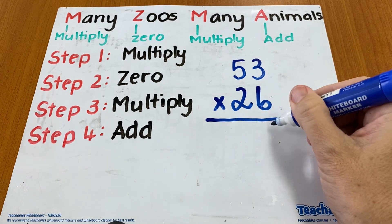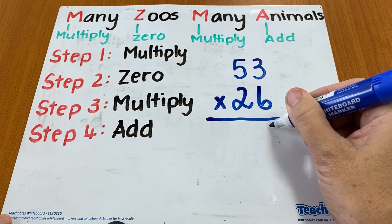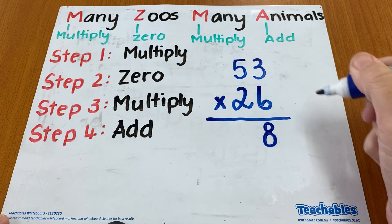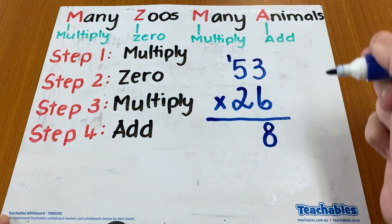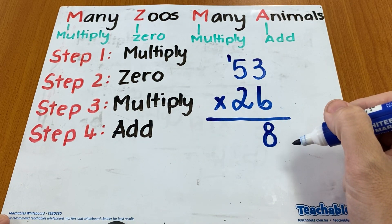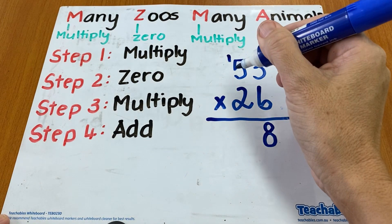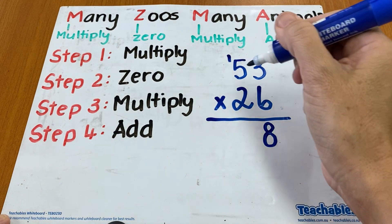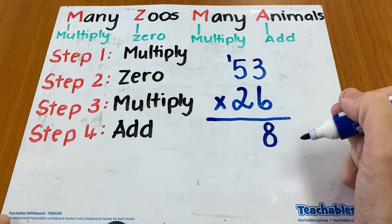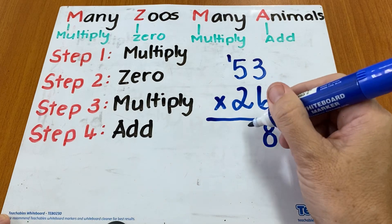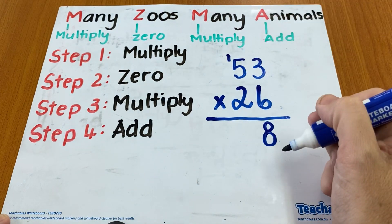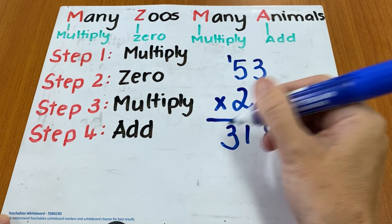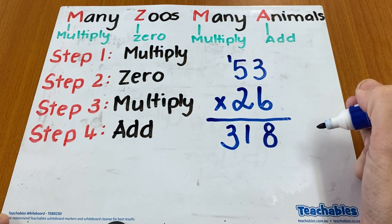So three times six is 18. I put the eight underneath the line and I carry the one up above the five. Now I'm also going to come down to the place value of ones here — five times six, which I know is 30, but I need to add on the one so it's 31. So that's step one.